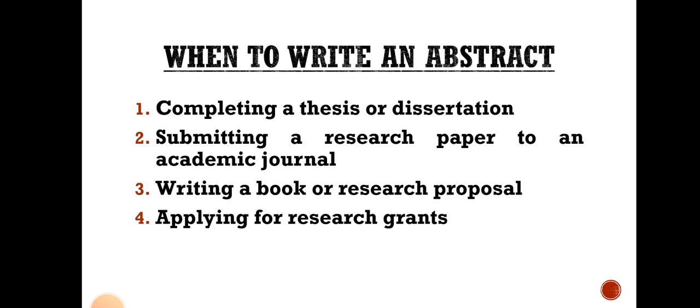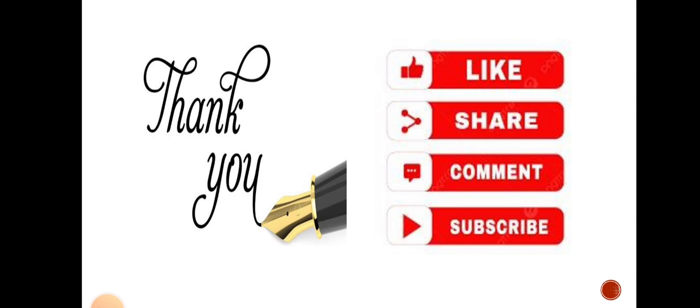Finally, when do we write an abstract? Number one: when completing a thesis or dissertation. Number two: when submitting a research paper to an academic journal — the abstract is required for approval of the paper. Number three: when writing a book or research proposal. Number four: when applying for research grants. So this is all about our topic — how to write an abstract. Hope you understand well. Thank you and Allah Hafiz.